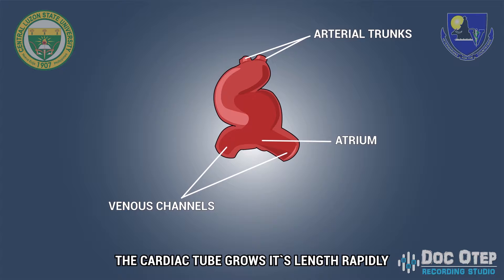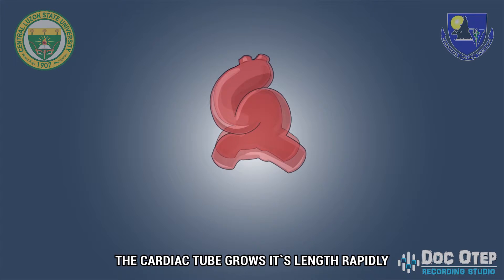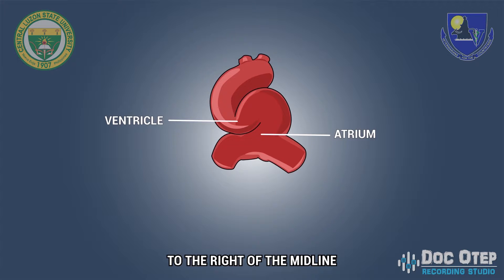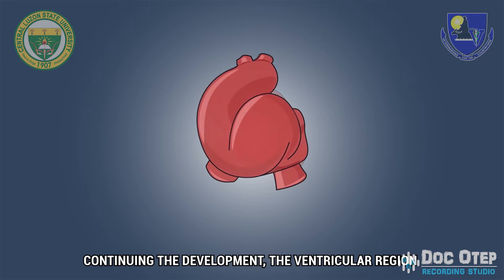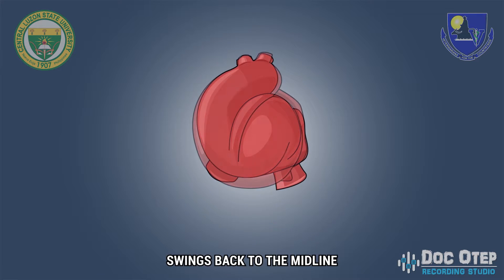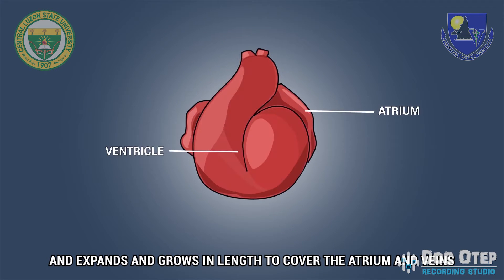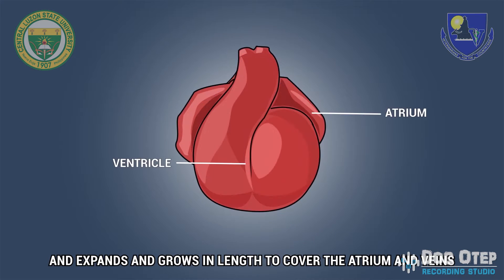The cardiac tube grows rapidly in length, and the embryonic ventricle is bent into a loop to the right of the midline. Continuing the development, the ventricular region swings back to the midline and expands and grows in length to cover the atrium and veins.